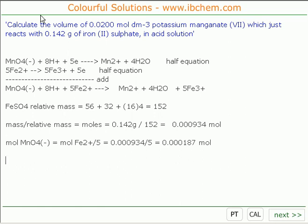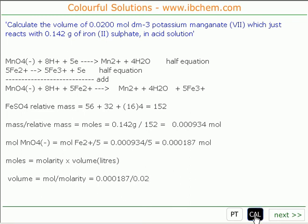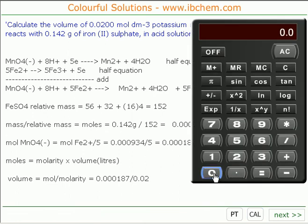And now, we are asked to calculate the volume. So now we're dealing with the solution. We have to look at the relationship, and the relationship is moles equals molarity times volume in litres. So to get the volume, we must divide the moles by the molarity. Volume equals 0.000187 over the molarity, which we're given as 0.02. And that comes to 0.00935.